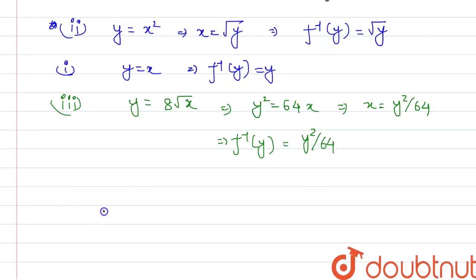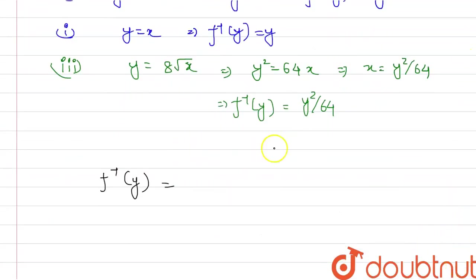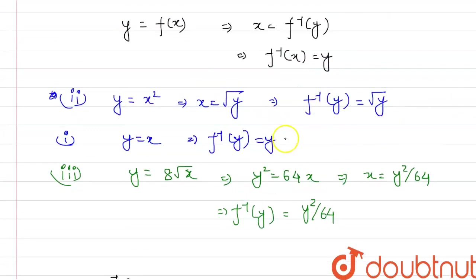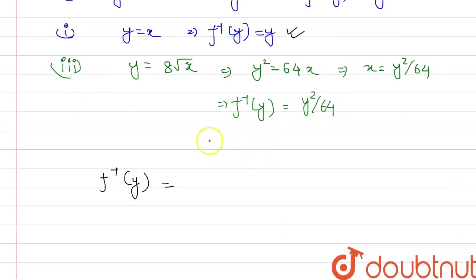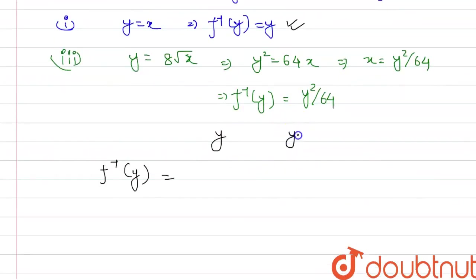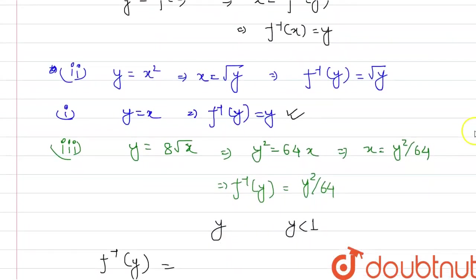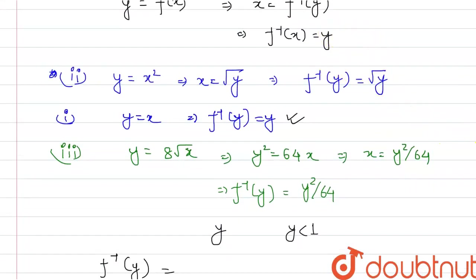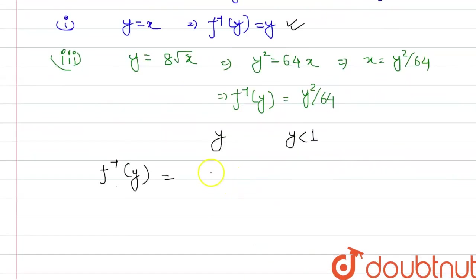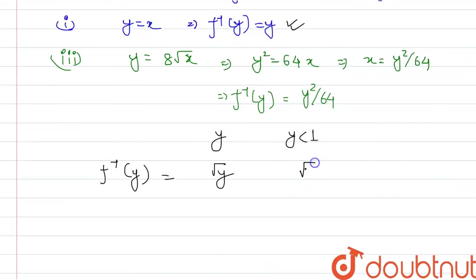So finally, we can write down the definition of f inverse of y. When y is less than 1, the value of the function is y. For the second case, when x is between 1 and 4, our f inverse of y is equal to √y. So this will be equal to √y, and our √y must lie between 1 and 4.